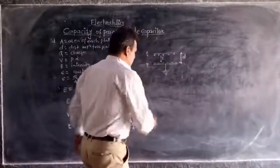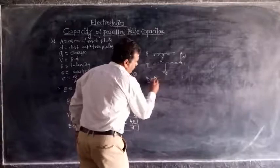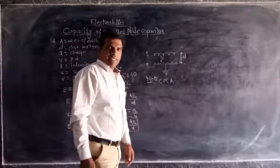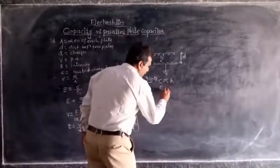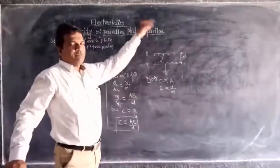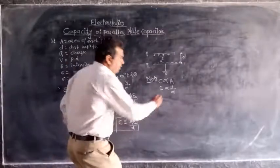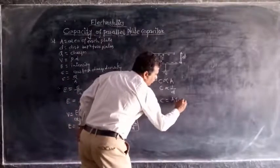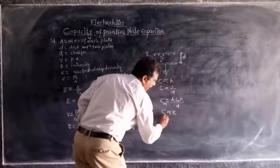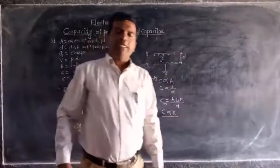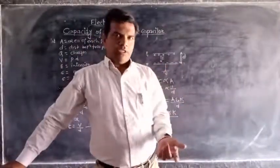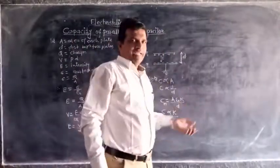This capacity depends upon: C is directly proportional to A, the area of each plate — if the area of the plate increases, the capacity also increases. C is inversely proportional to d — if the distance between the two plates increases, the capacity decreases. And with a dielectric medium, C equals A epsilon-zero K upon d, so C is directly proportional to K — if the dielectric constant increases or a dielectric material is introduced between the two plates, the capacity also increases. This is the capacity of a parallel plate capacitor with and without dielectric.